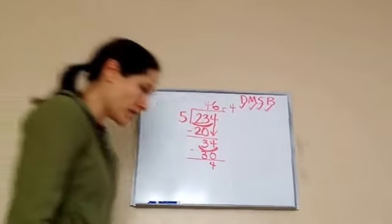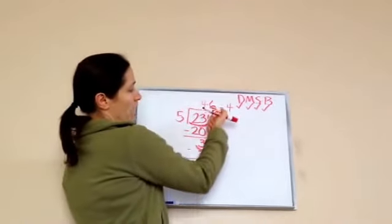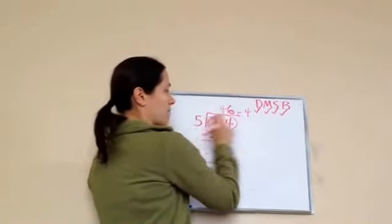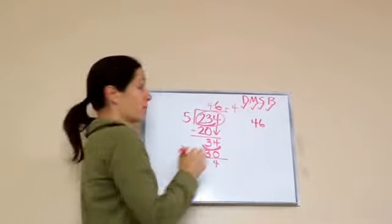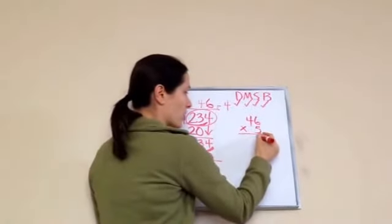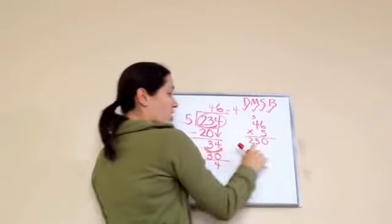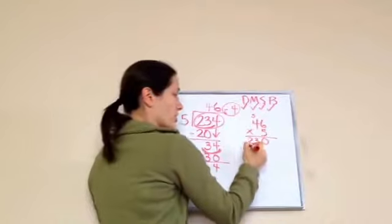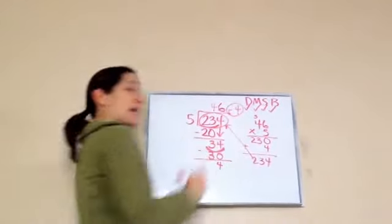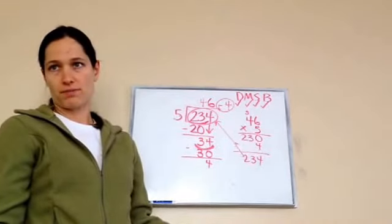And that's how that works. If you want to check whether you've done it right, take 46 and multiply it by 5 — that's kind of the backwards method. 46 times 5: 6 times 5 is 30, carry the 3. 5 times 4 is 20, plus 3 more is 23. So it's 230. Then this remainder 4 — you just add 4 more to it because I had 4 remaining. That equals 234, which is exactly what we wanted. You don't actually have to do this, but it's a good checking method.